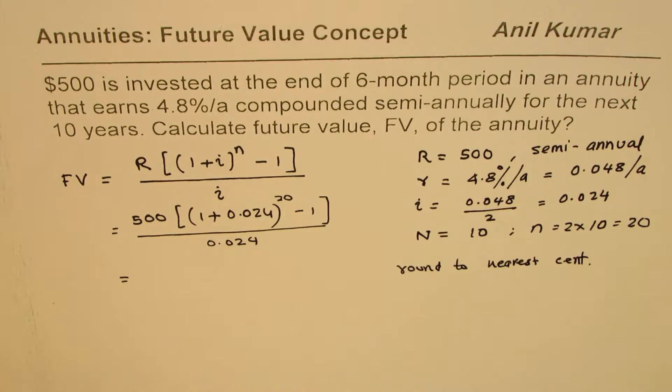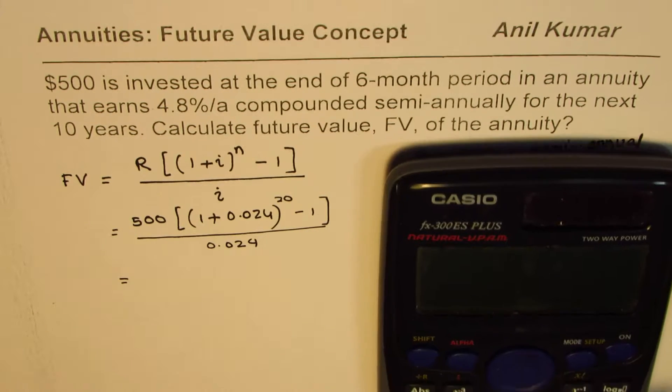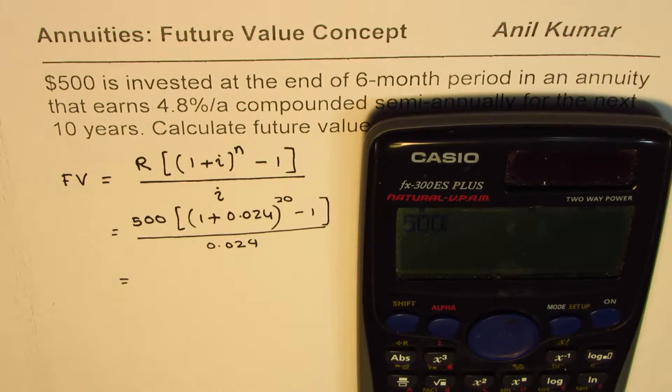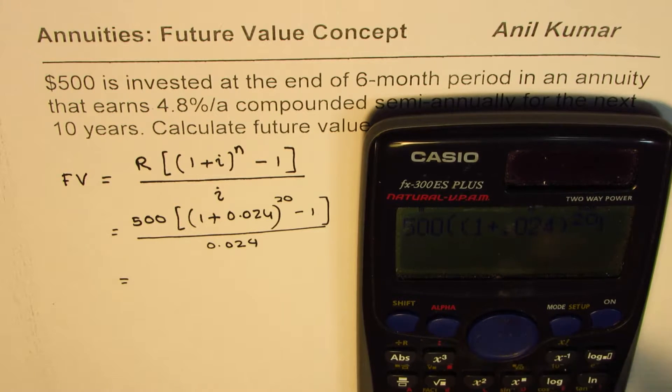That is the hundredths place, correct. So that is how you are going to solve these questions - simple steps. I hope you find it not at all difficult. So it's 500, use two brackets, that is critical, and then we have (1 + 0.024) bracket close, exponent 20.